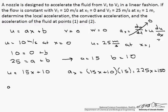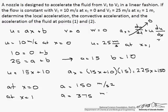At x equals 0, we substitute x equals 0 into our acceleration. Our acceleration is going to equal 150 meters per second squared. At x equals 1, we substitute 1 into our acceleration, a equals 375 meters per second squared.